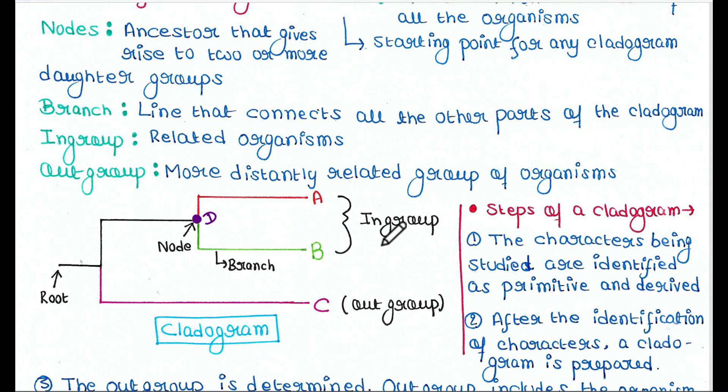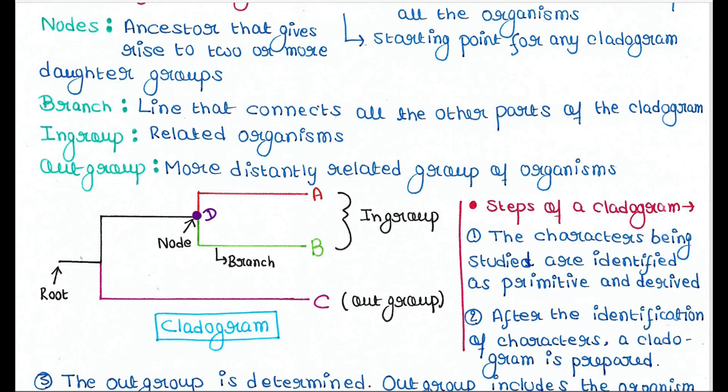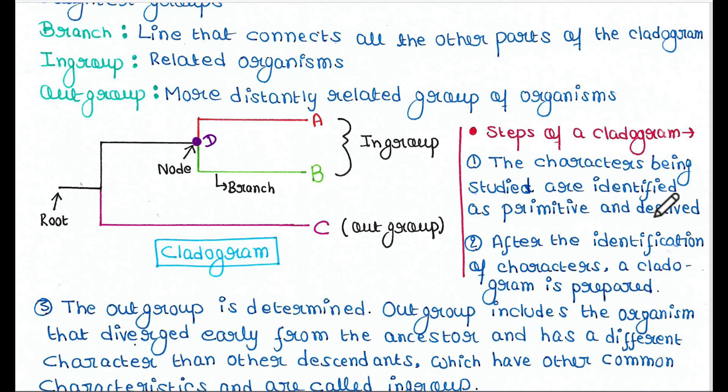Let's talk about the steps of a cladogram. The characters being studied are identified as primitive and derived. So let's talk about B. It has few primitive characteristic features just like its ancestor D, and few new characters for which B is unique.